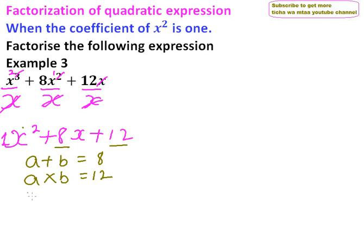We rewrite our expression as x squared, and instead of writing 8x, we write it as 6x plus 2x, which is the same as 8x, then plus 12.